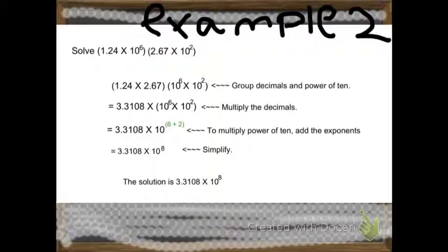So, now we multiply these decimals. To multiply the power of 10, add the exponents.